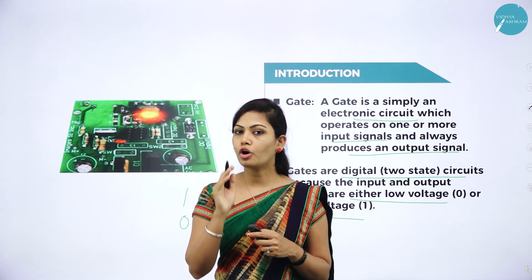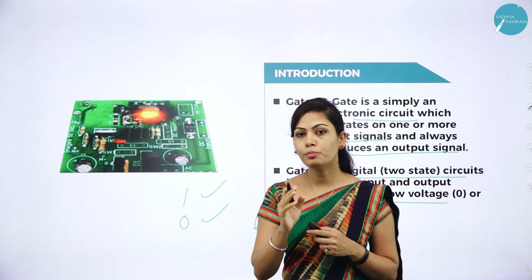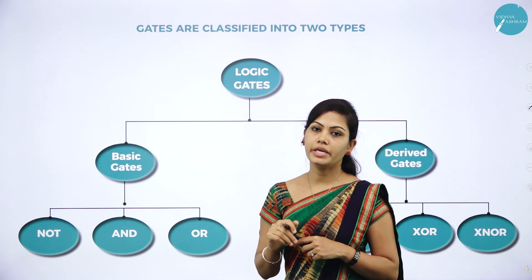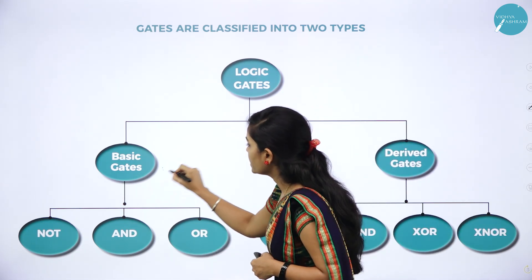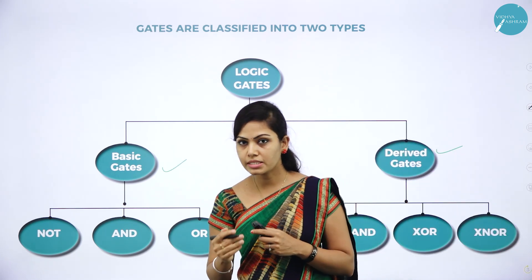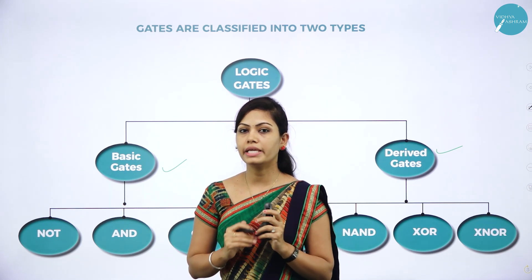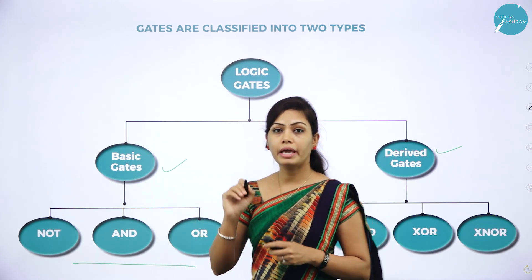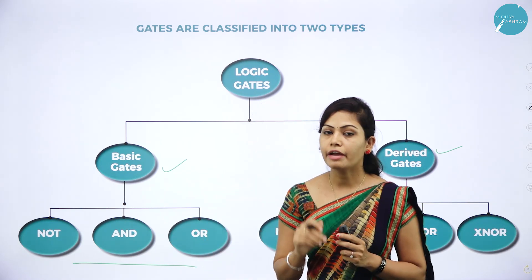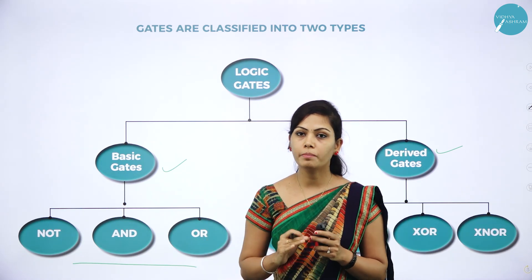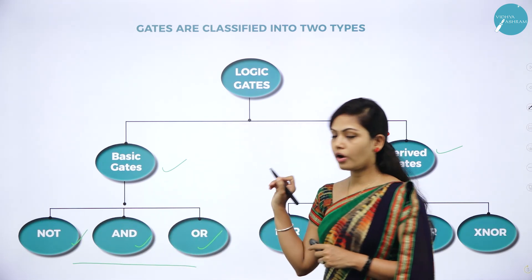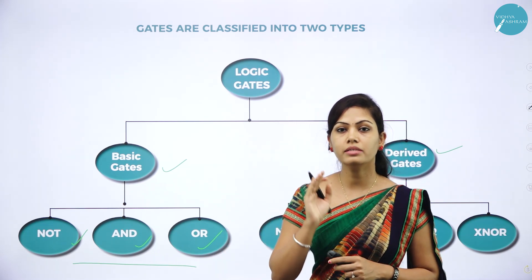Most logic gates accept input of two binary values and provide an output of a single binary value. Logic gates can be classified as basic gates and derived gates. All digital systems can be constructed by only three basic logic gates, and derived gates are those made up of simple combinations of the basic gates. The three basic gates are NOT gate, AND gate, and OR gate.